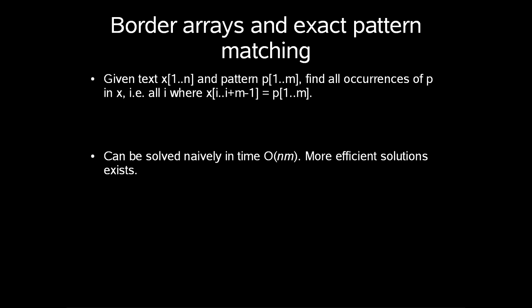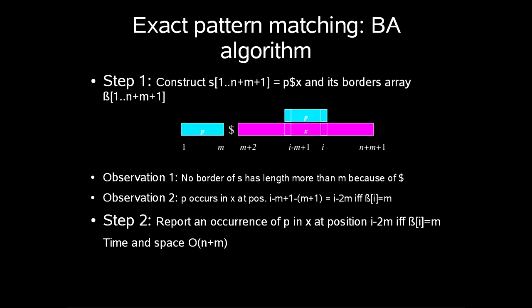Exact pattern matching: a problem in string algorithms. Given text x1 up to n and a pattern p1 up to m, find all occurrences of p in x, i.e. all i where x i to i plus m minus 1 is equal to p1 up to m. The solution to this problem can be solved naively in time order n times m. There of course exist more efficient solutions, both in theory and in practice. I will begin to describe to you a simple solution based on border arrays that has a worst case running time of order n plus m.